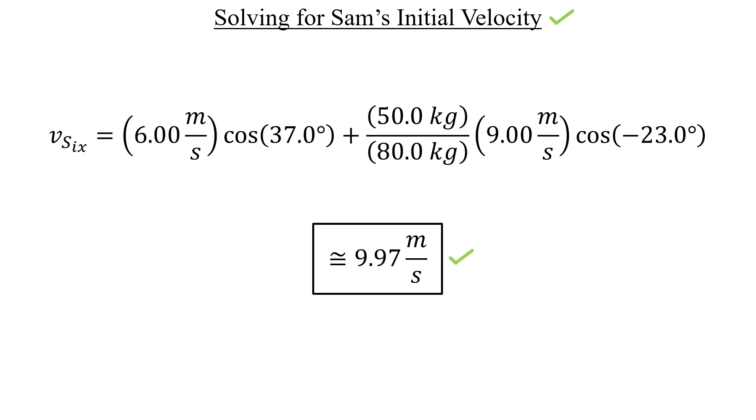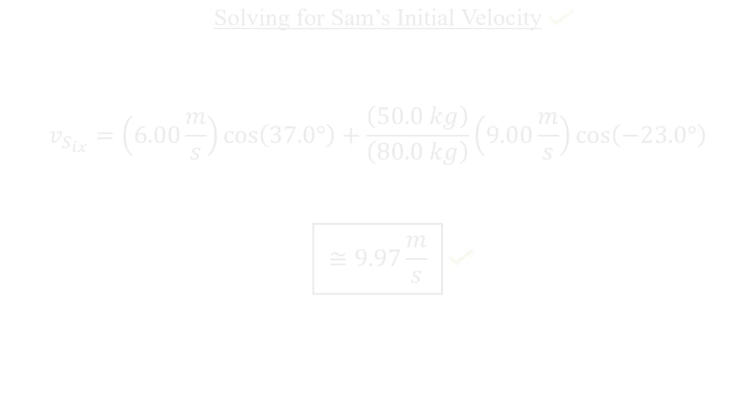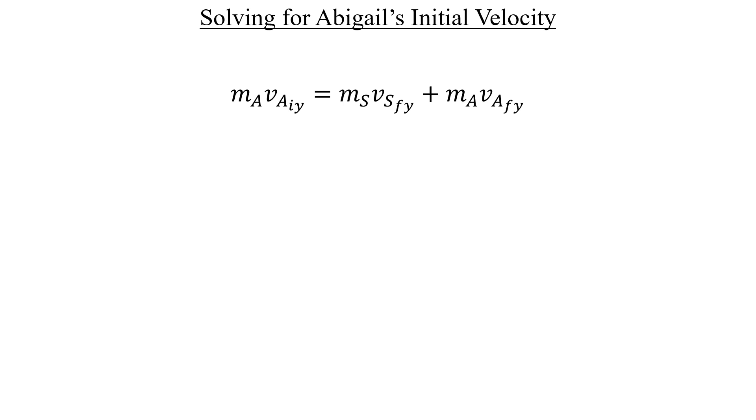Let's go back to the y equation, and do the same thing for Abigail. We'll isolate her initial velocity on the left by dividing both sides by her mass, and this time, we'll have a ratio of Sam's mass to hers in the first term, and the second term will divide out her mass completely.